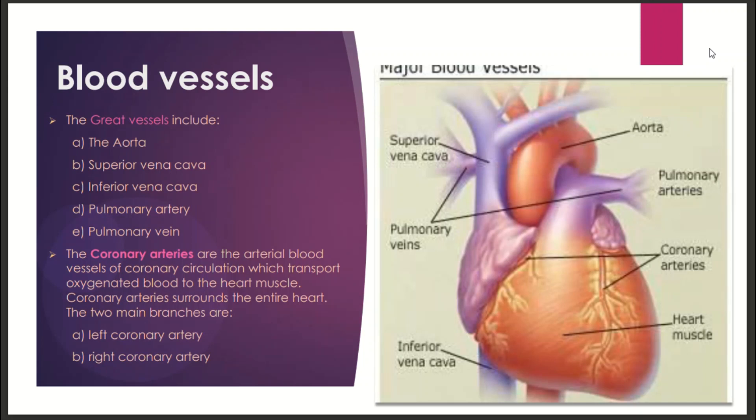The great vessels are of five types: first, the aorta; second, the superior vena cava; third, the inferior vena cava; fourth, the pulmonary artery; and fifth, the pulmonary vein.